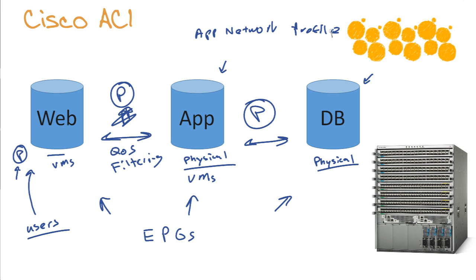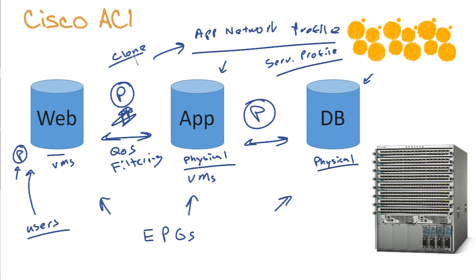Think of this application network profile as kind of like a service profile we were utilizing inside the UCS system. We would create a service profile that could be applied to any future hardware we drop in to give that hardware its personality — how it's going to boot, how it's going to behave, where it's going to store stuff, what virtualized identities it will use. Well, the application network profile is a lot like that — it's putting the policy and the infrastructure in place to support our particular application. And just like service profiles, we could clone those things and create nice application profile templates, making rolling out further apps that share characteristics very, very simple.